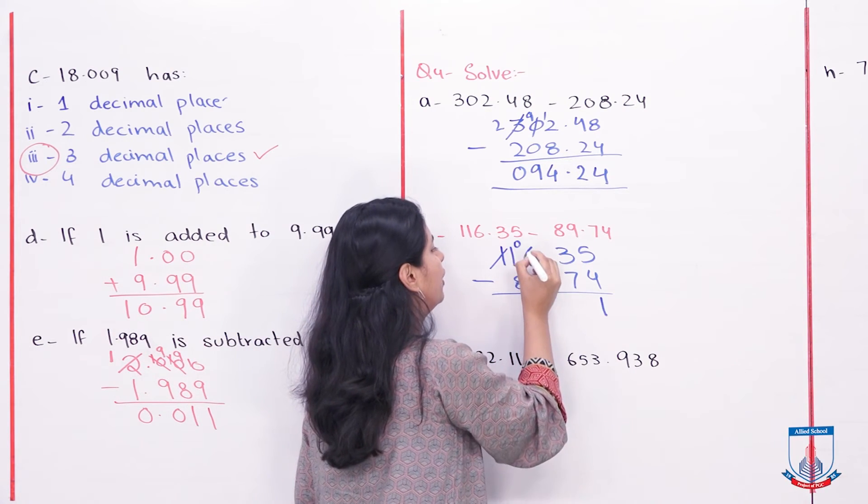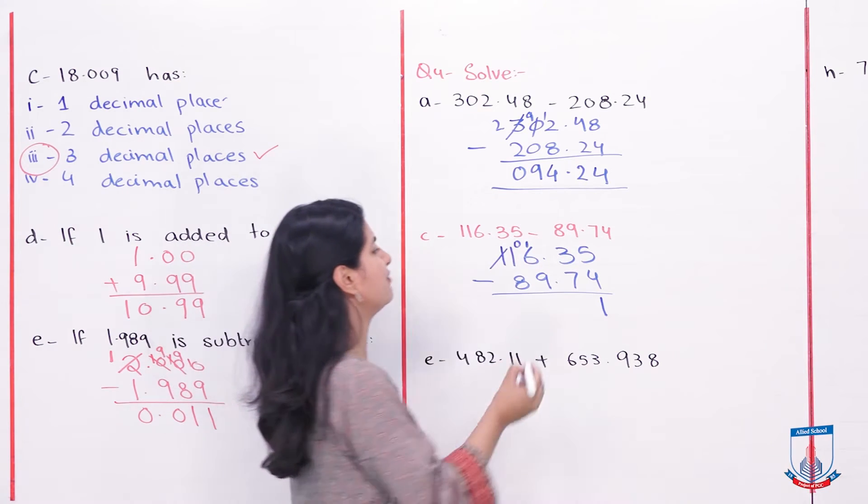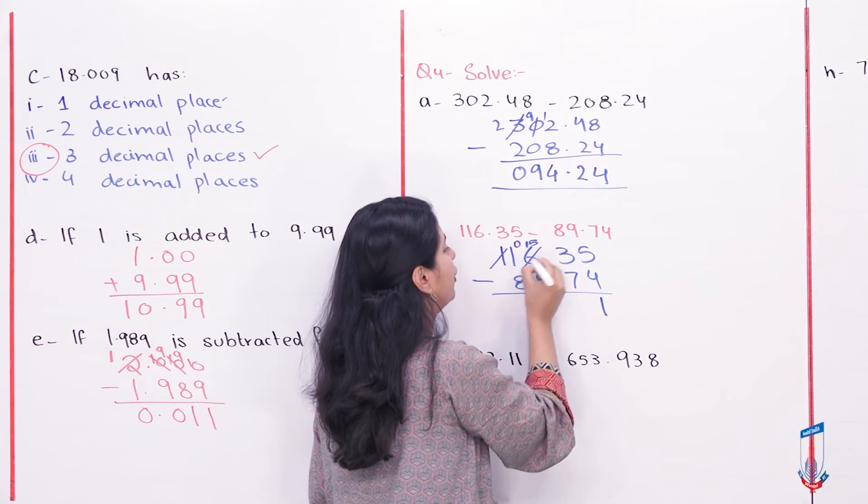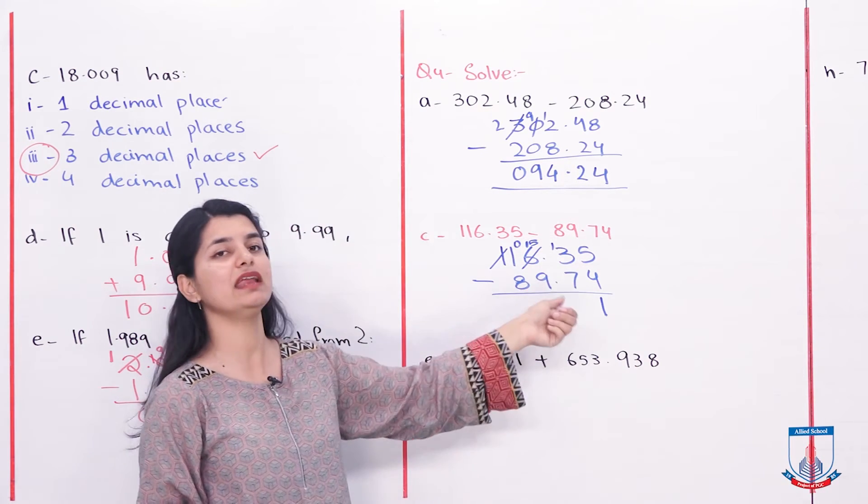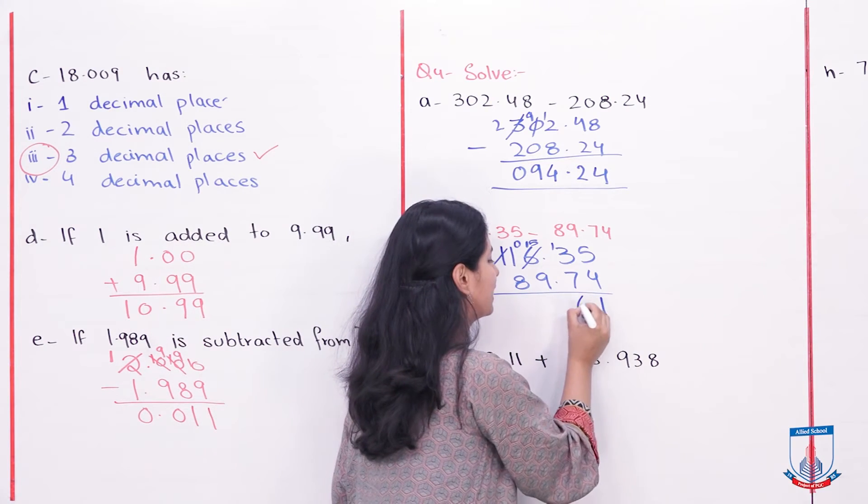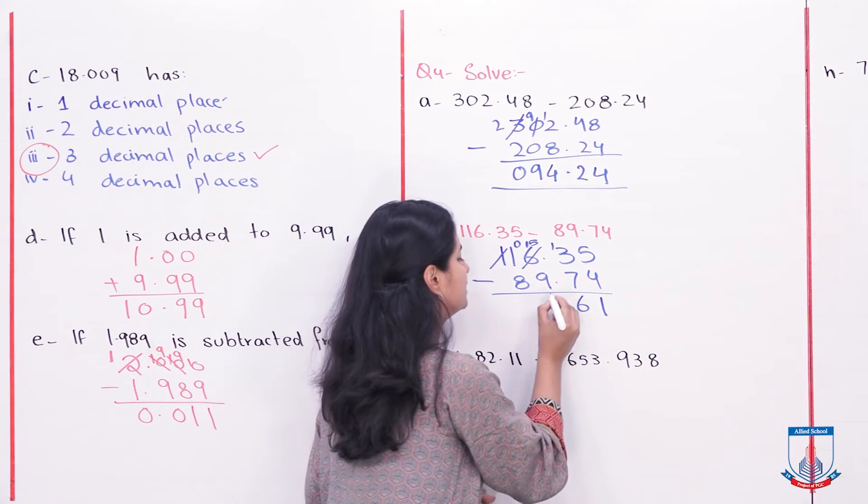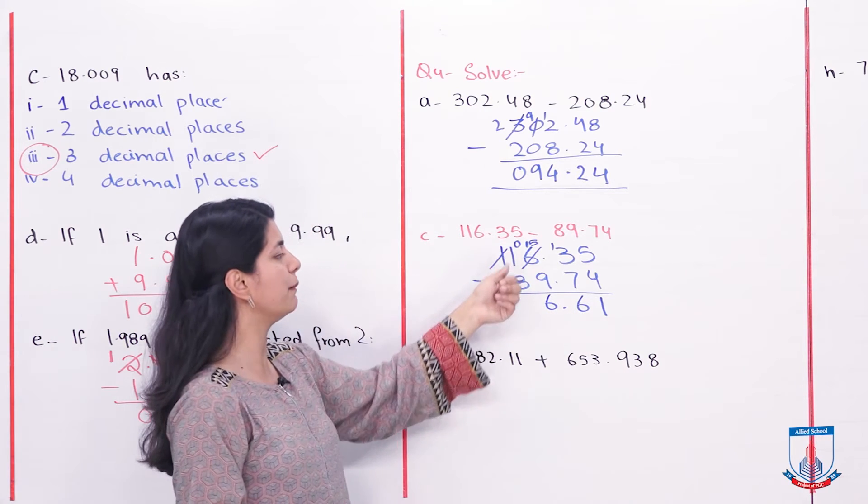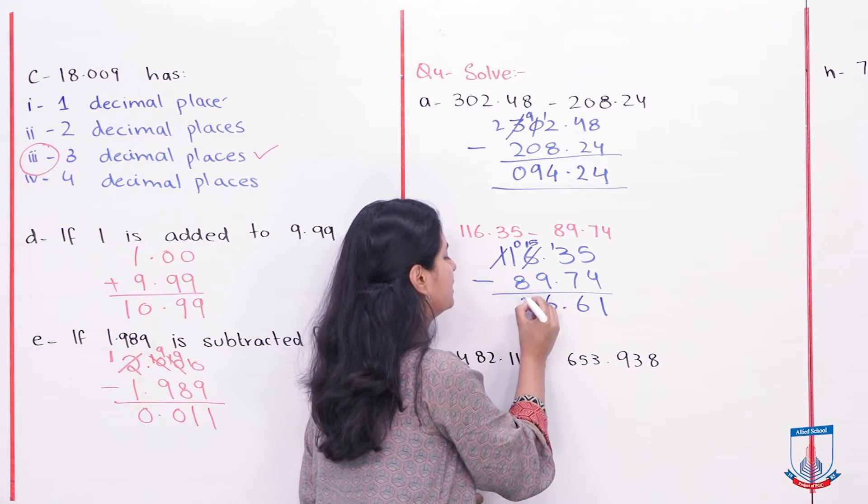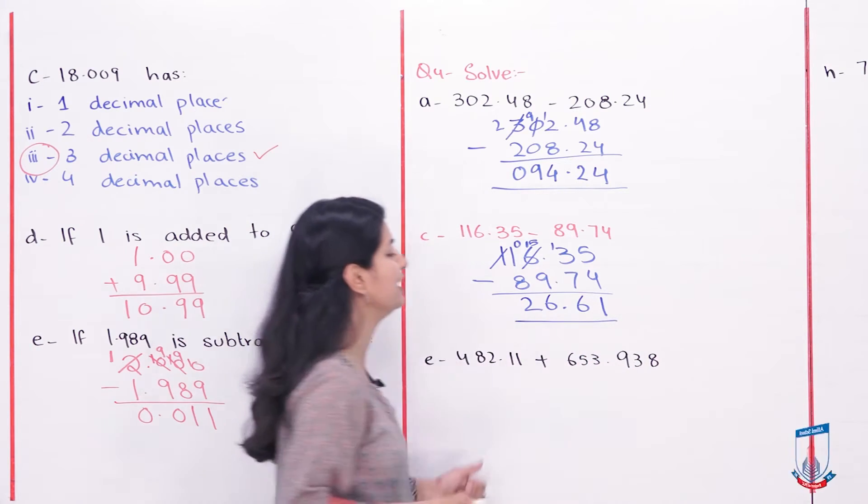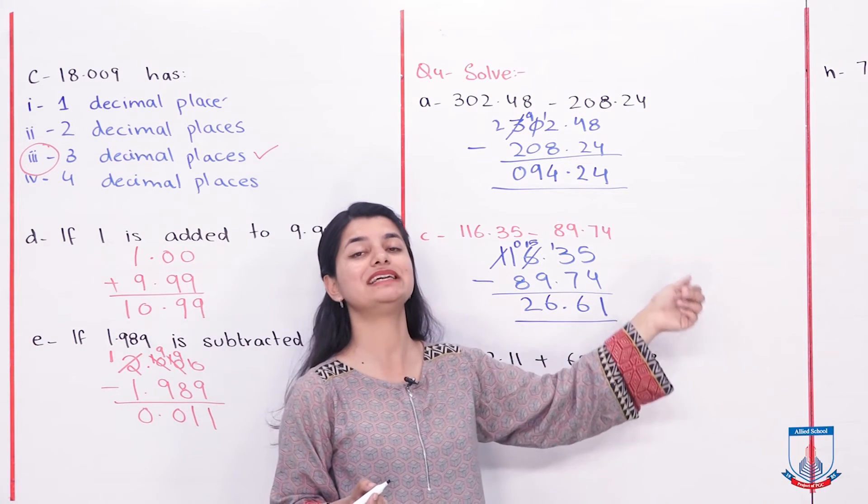Now with 16, this is 15 and this is 13. 13 minus 7 is 6. So this is 6 again. Point here. 15 minus 9 is 6 again. And here we have 10. So 10 minus 8 is 2. So this is 26.61 part C.